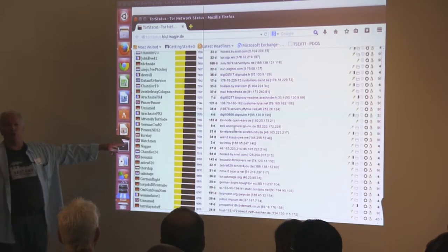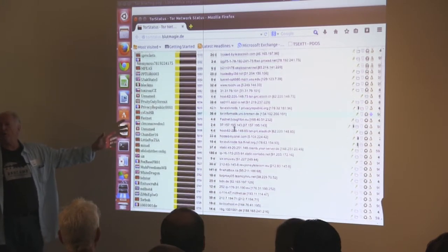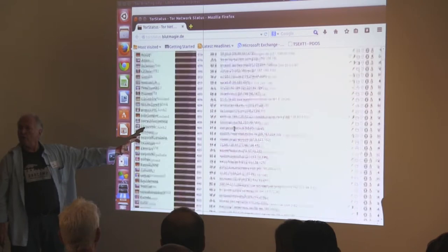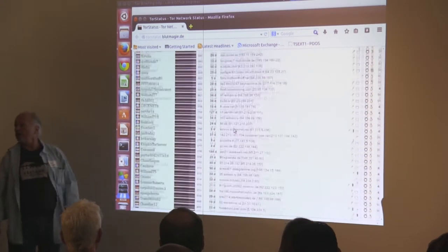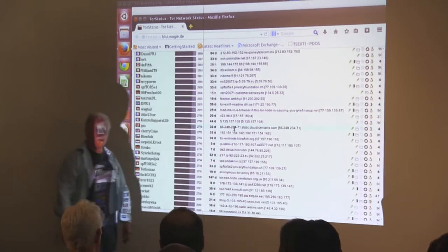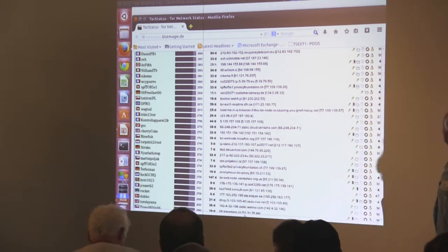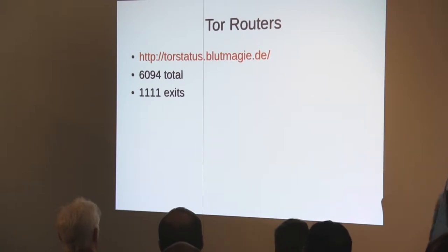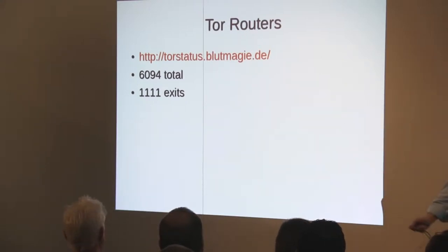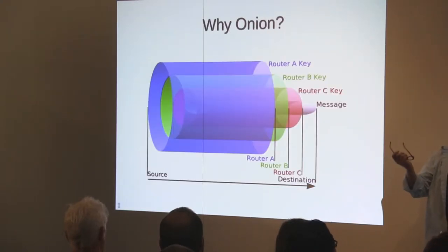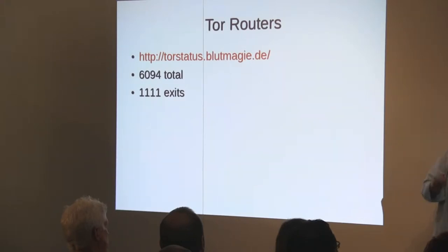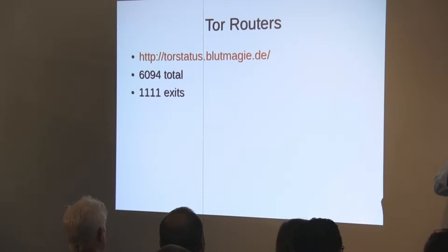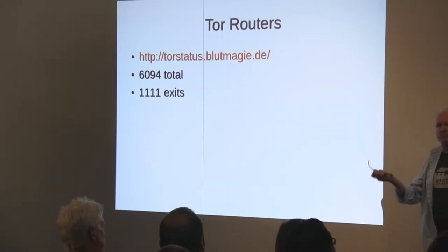There are over 1,000 exit nodes, and the exit node that gets picked is pretty much at random. So in order to find out who you are, you not only have to break the code, but you have to actually track where the packet went through all these nodes. I looked at this a couple of days ago — that was the number of relay nodes, or total nodes, and the number of exits I found. It changes all the time. If you want to host a relay node it's very simple to do and pretty safe. If you want to host an exit node, there are some considerations because you get a lot of takedown notices. You're not the guy who's actually accessing a particular website with copyrighted material.